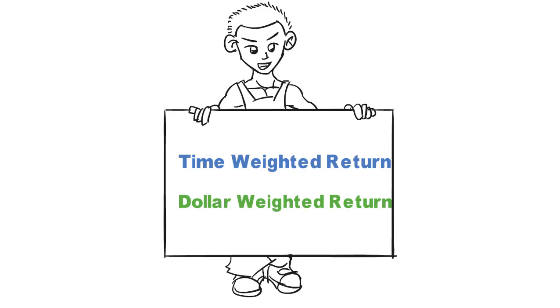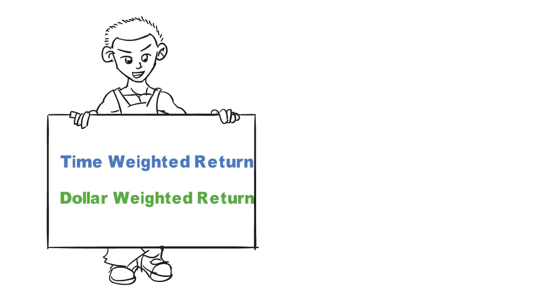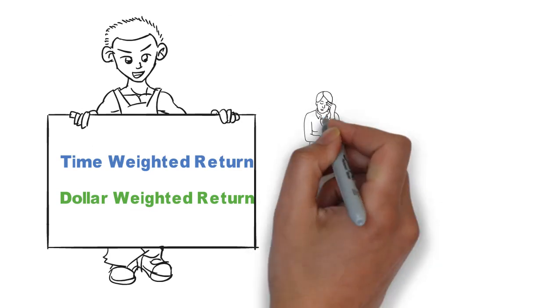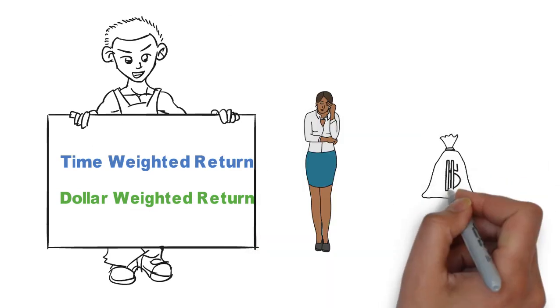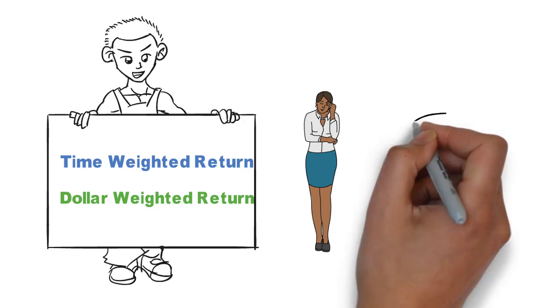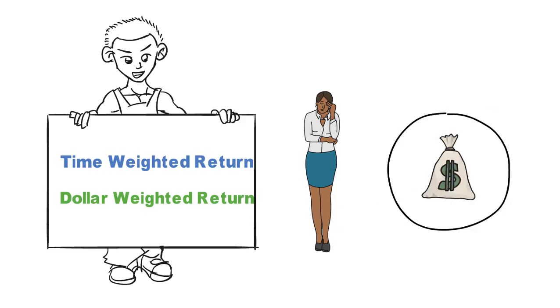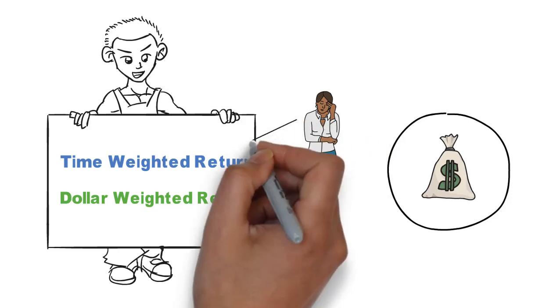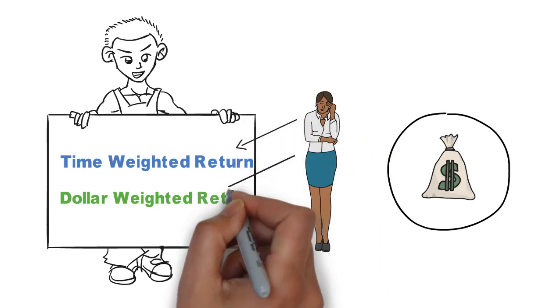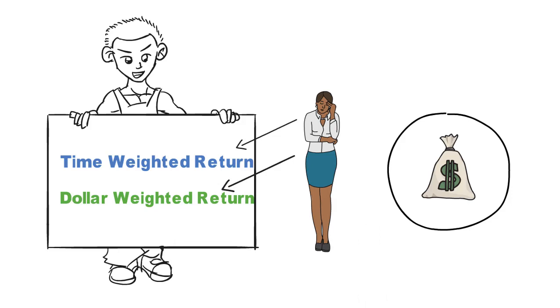Measuring the performance of an investment is important for an individual investor or portfolio manager who manages client's money. This performance is measured through different averaging techniques. For example, one might do time-weighted return and the other might do dollar-weighted return. Dollar-weighted returns are conservative in nature and yield lower returns than time-weighted returns.